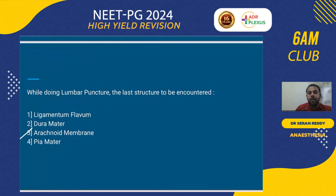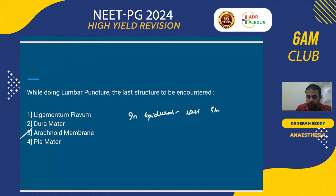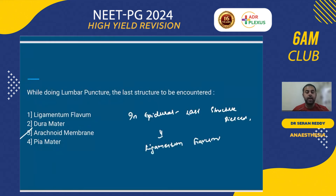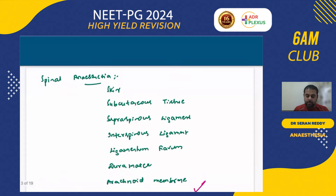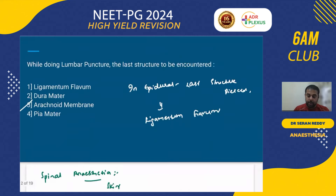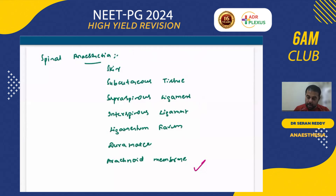Similarly, if they ask in epidural what is the last structure pierced, the answer is ligamentum flavum. In epidural, the drug is inserted between ligamentum flavum and dura mater. In spinal anesthesia, the drug is deposited beyond the dura mater into the subarachnoid space.